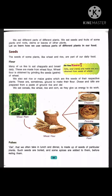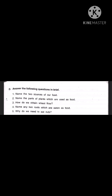Children, we will write the answer of question number 2 like: the parts of plants that are used as food are seeds, fruits, leaves, stems and roots.